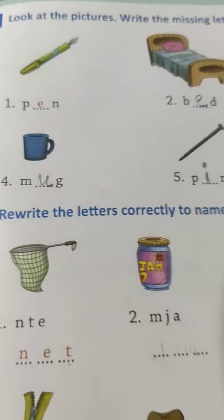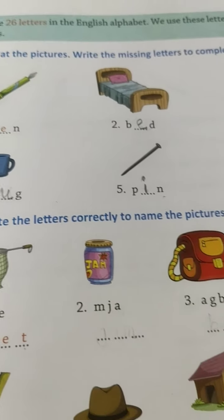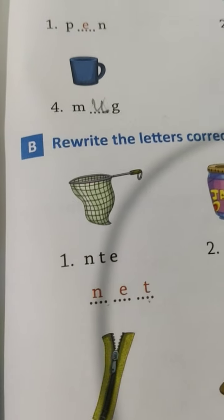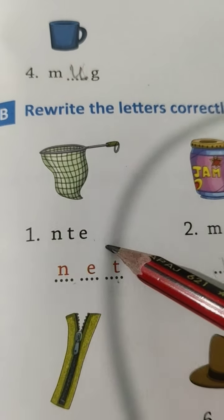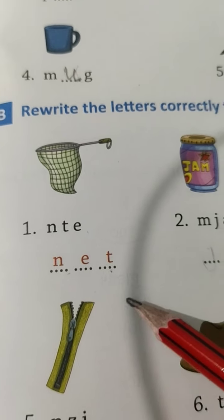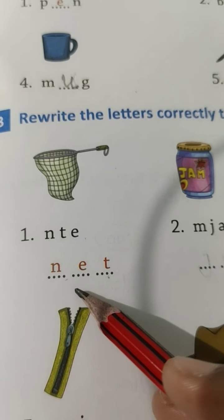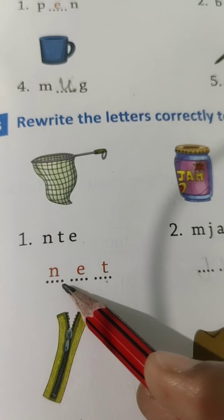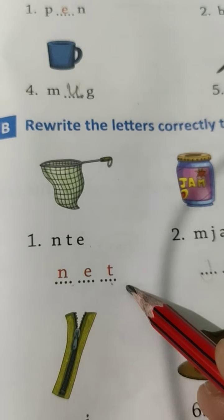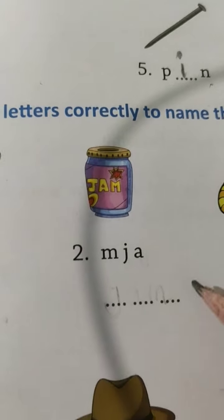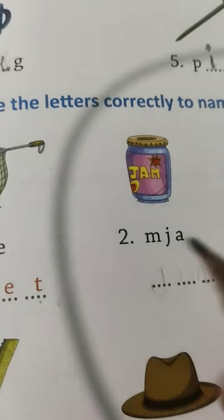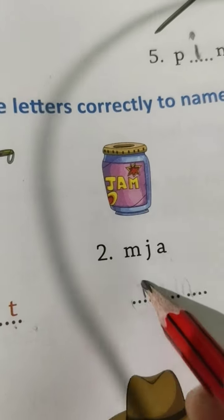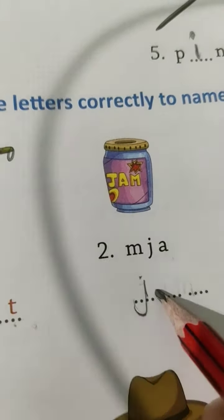Exercise B. Rewrite the letters correctly to name the pictures. The first one is done for you. N-T-E — rewrite it correctly — N-E-T. Net. Next, we will do M-J-A. We arrange it correctly: J-A-M. Jam.